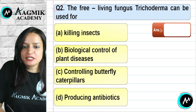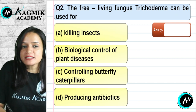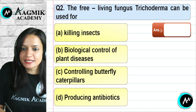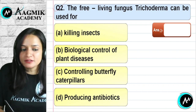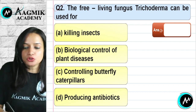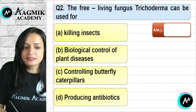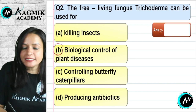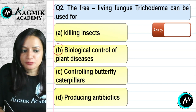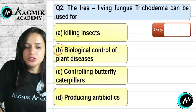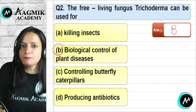Question number 2: The free-living fungus Trichoderma can be used for biological control of plant diseases. It is not for killing insects, not for controlling butterfly caterpillars, and not for producing antibiotics. Trichoderma is used to control plant diseases and pathogens. So the correct option is B.